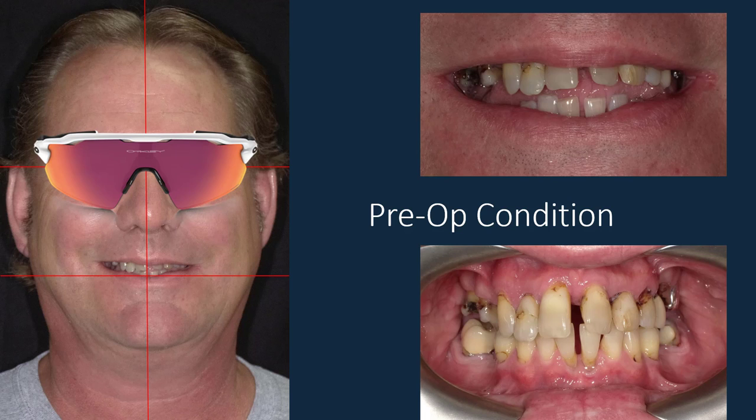Many times it's a patient where the teeth are in poor shape and the aesthetics are not correct. If we're trying to do, for example, an immediate loaded hybrid that's going to be delivered at the time of surgery, how do you make that? What shape should the teeth be? Where should the incisal edge be? One of the biggest reasons I use it is to do a 2D simulation and find out what looks best in that patient's face.